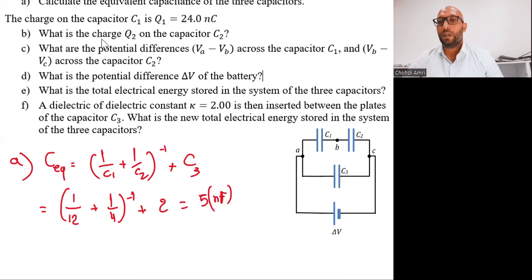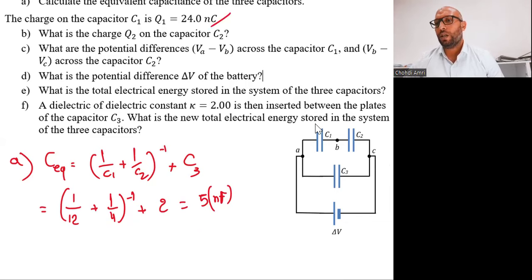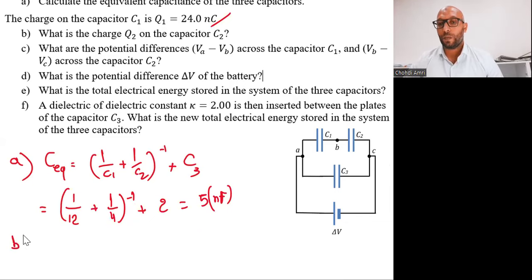For question B, what is the charge Q2? The charge on capacitor C1 is Q1 equals 24 nanocoulombs. It's asking about the charge on the second capacitor. We see that C1 and C2 are connected in series.